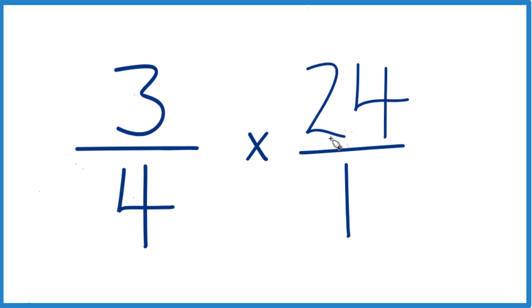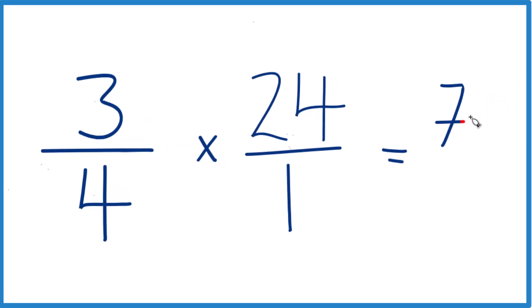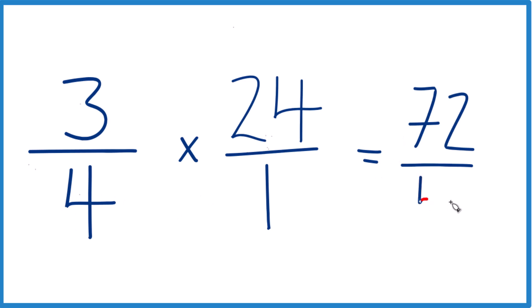With fractions, when we multiply them, we multiply the numerators. So 3 times 24 is 72, and then when we multiply 4 times 1, we get 4.